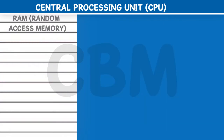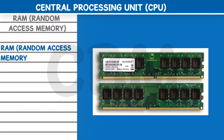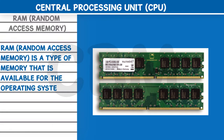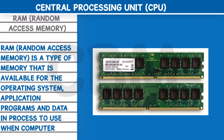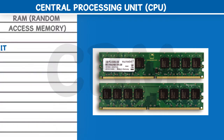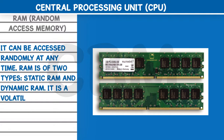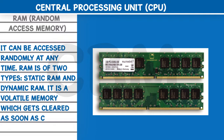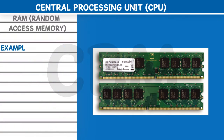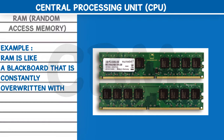RAM or random access memory is a type of memory that is available for the operating system, application programs, and data in process to use when the computer is on. It can be accessed randomly at any time. RAM is of two types: static RAM and dynamic RAM. It is a volatile memory which gets cleared as soon as the computer is switched off. RAM is like a blackboard that is constantly overwritten with new data.